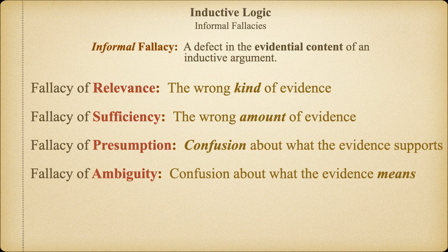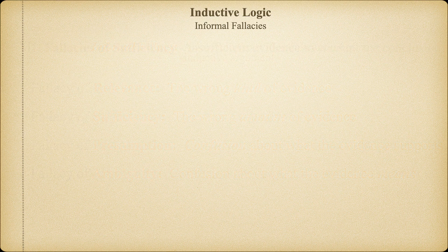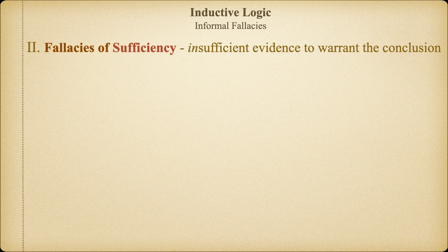Informal fallacies can also occur when we make unwarranted assumptions, or because our arguments contain ambiguities that cause the argument to go astray. In our last video, we examined some of the common informal fallacies that occur when we fail to use evidence that is relevant to the conclusion that we're trying to reach. In this video, we'll look at a few examples of informal fallacies that occur when we fail to gather sufficient evidence to warrant our conclusion.